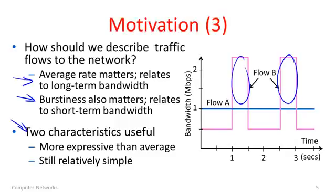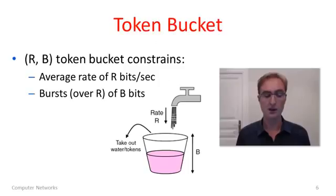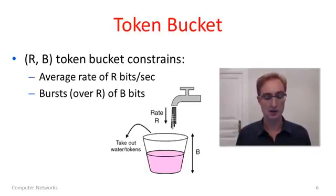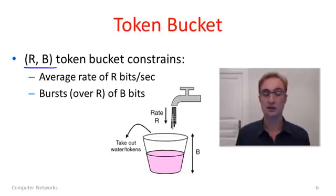On the other hand, these two characteristics — we've gone from one to two — still represent a relatively simple model for the network to work with, compared to all of the infinite variety of traffic patterns that could be sent into the network. So without further ado, let's go to the RB token bucket. The token bucket is a traffic shaper which has two parameters, R and B, to constrain the traffic.